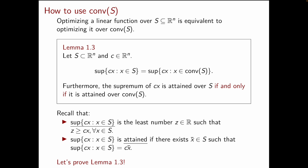We are now ready to work out the connection between integer programming and linear programming. The key idea is that optimizing a linear function over S, as we do in integer programming, is equivalent to optimizing it over conv S. Let's formally state this idea in Lemma 1.3. Let S be a subset of Rn and let C be a vector in Rn. Then the supremum of Cx subject to x in S is equal to the supremum of Cx subject to x in conv S.